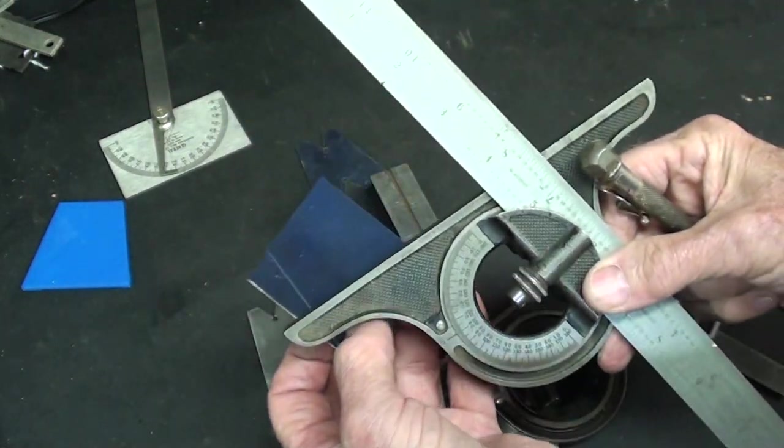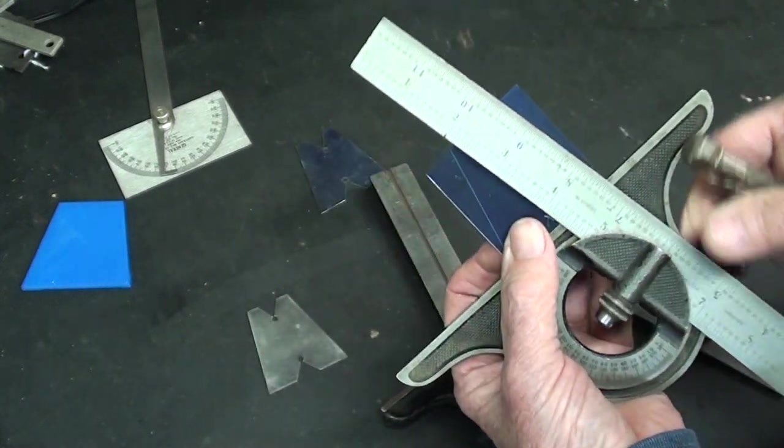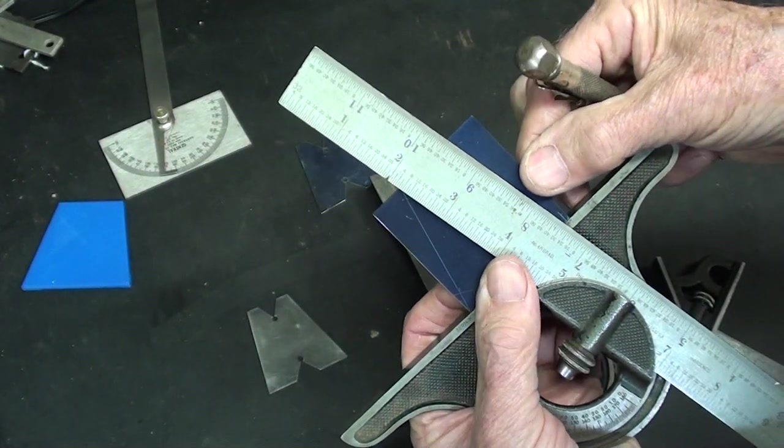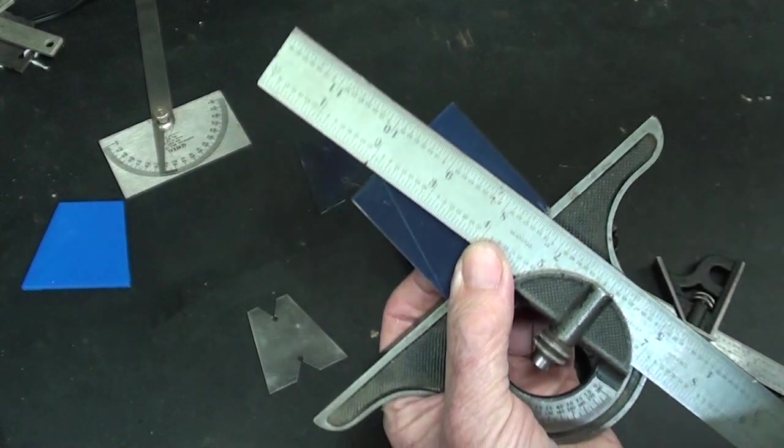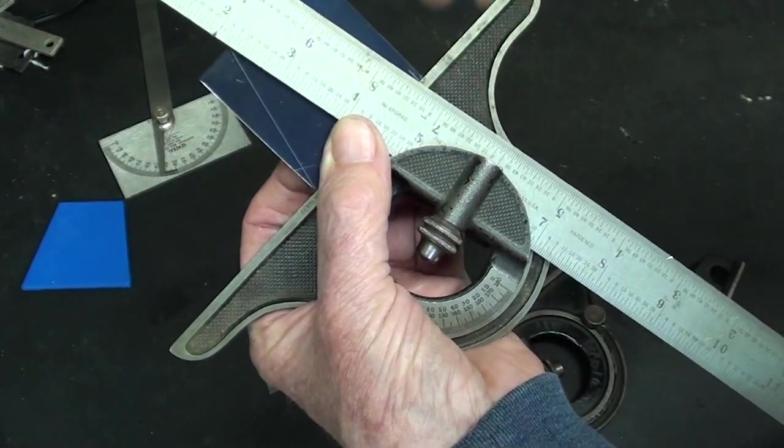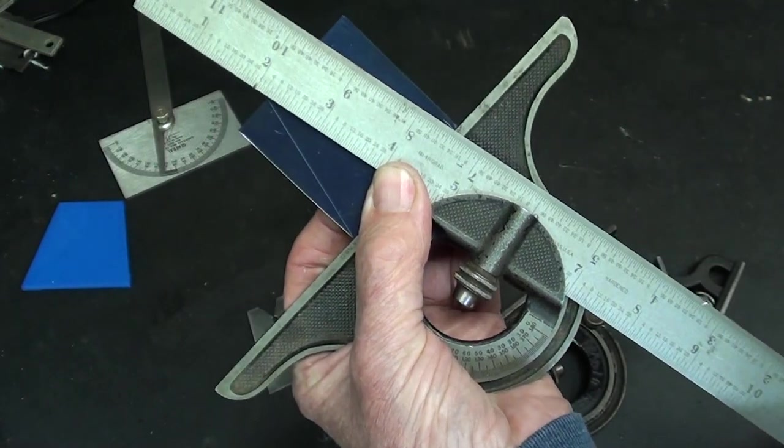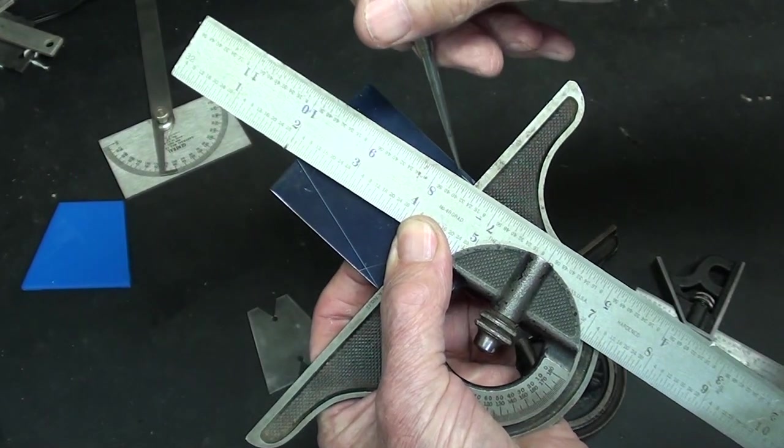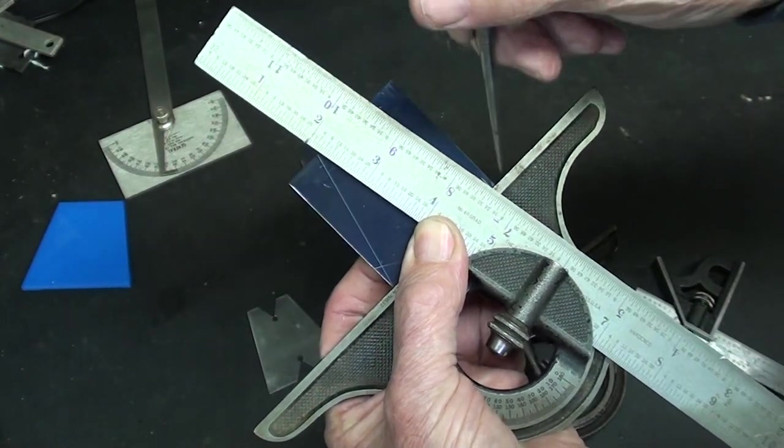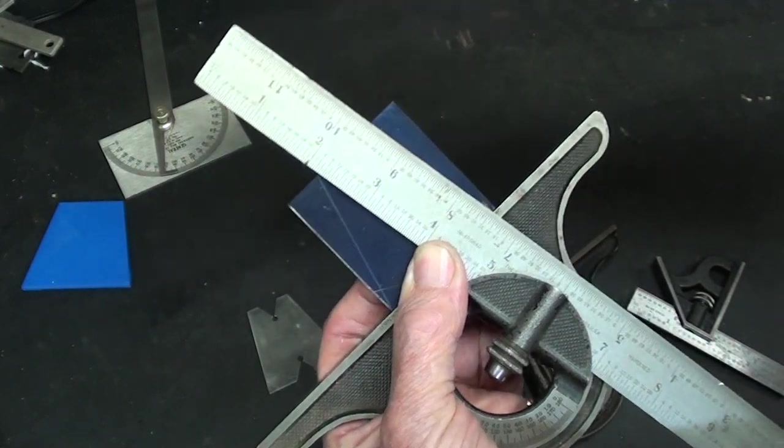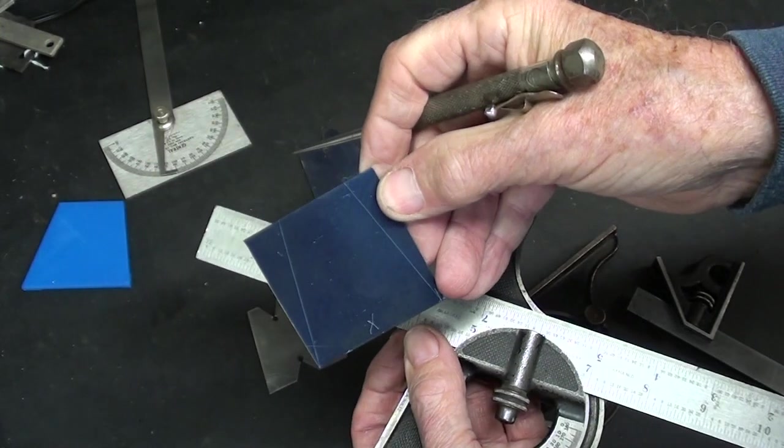But with this Starrett protractor set at 10 degrees. And again, trying to line it up here best I can with these 78-year-old eyeballs. And there we go.